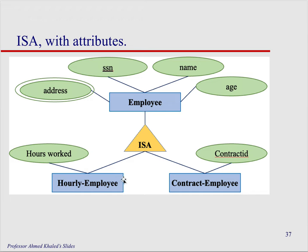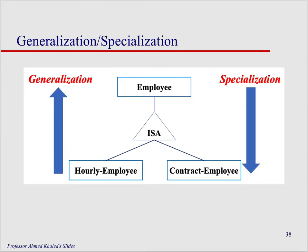Here is how this looks with more details. The hourly employee needs to track hours worked, while the contract employee needs to track a contract ID — so there are different attributes for each. But both are still employees and inherit address, social security number, name, and age. The hourly employee has a specific attribute like hours worked unique to that subclass. This is generalization and specialization — the specialization is what's unique, such as hourly versus contract.